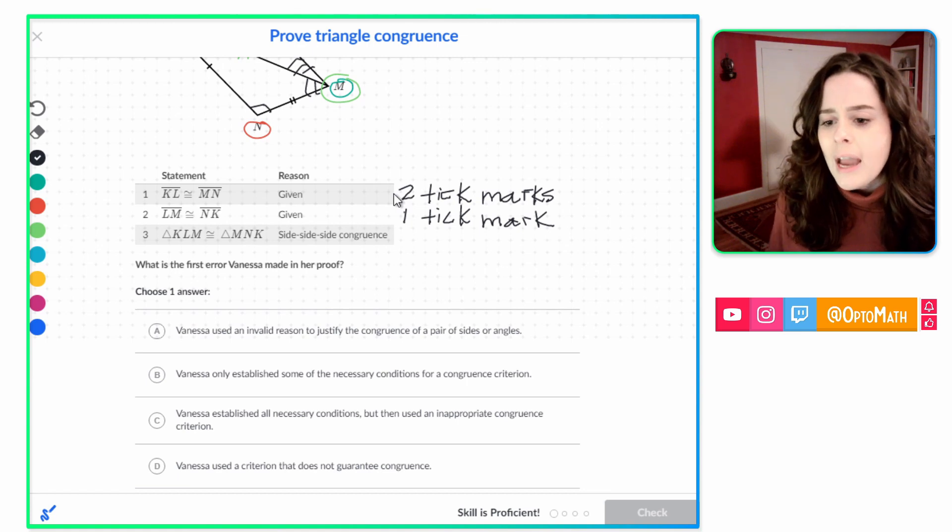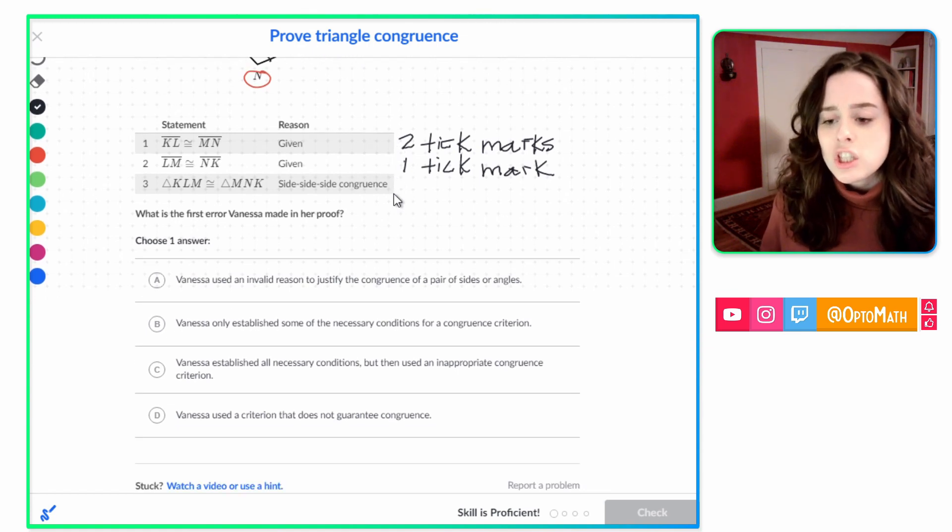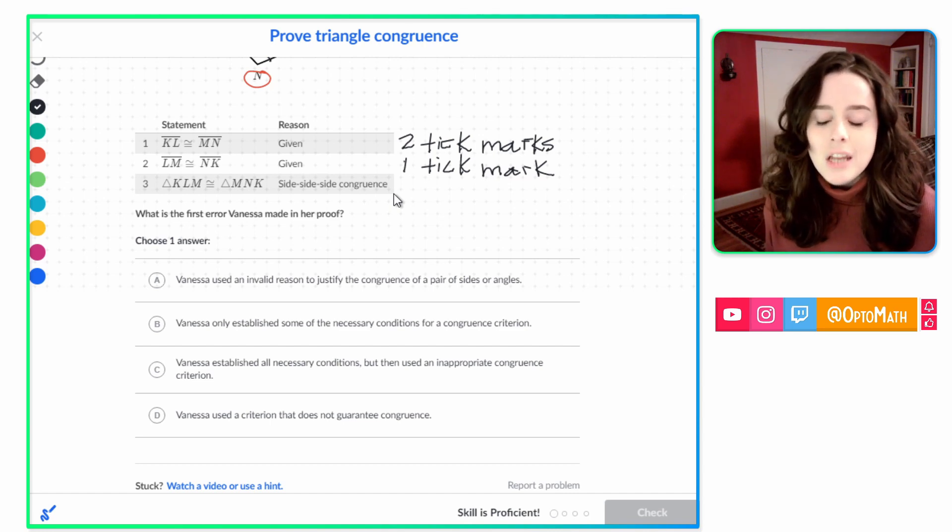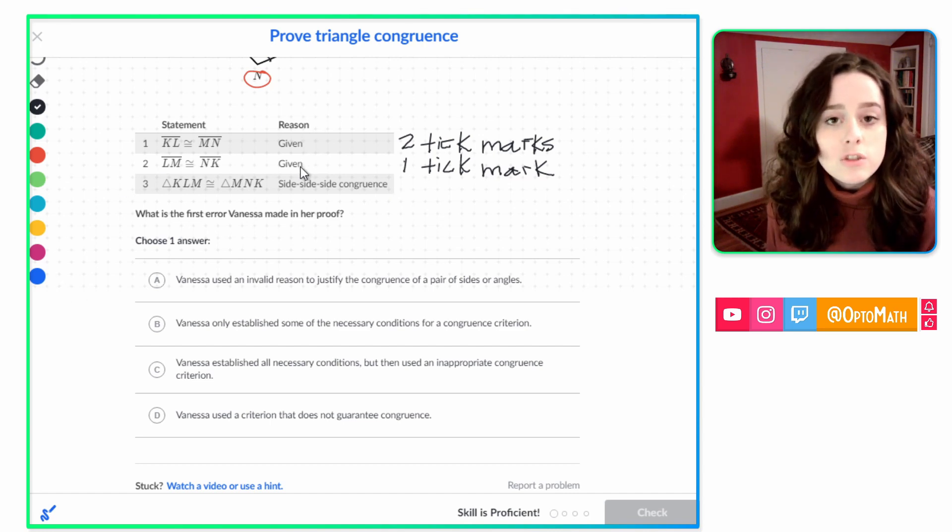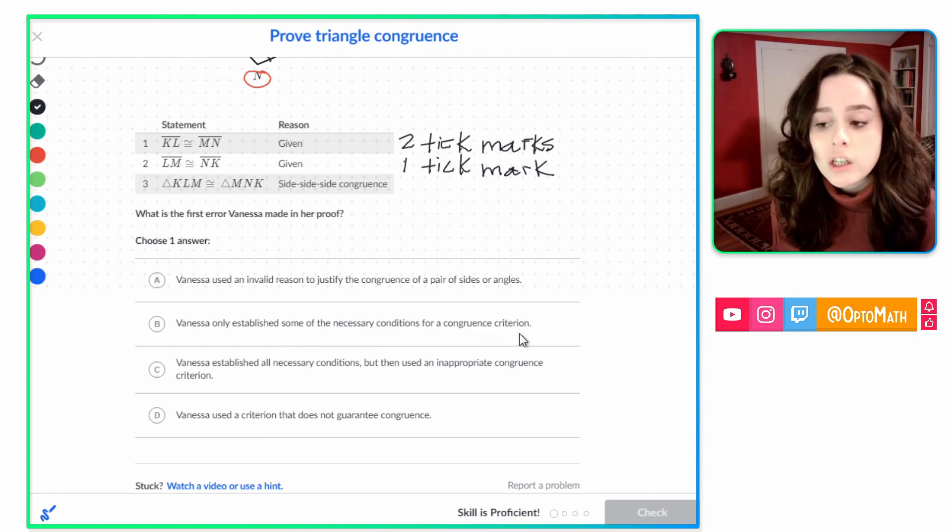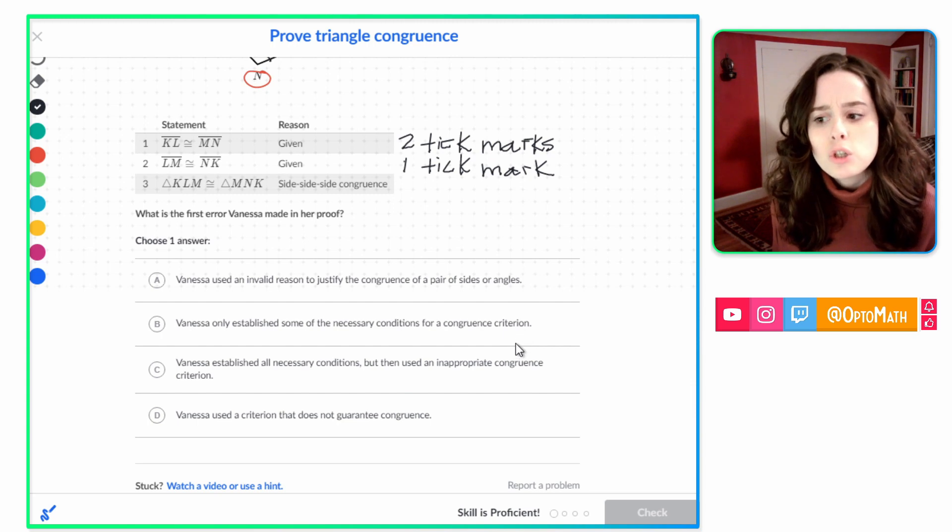So A says, Vanessa used an invalid reason to justify the congruence of a pair of sides or angles. Not true. She had the correct reasons for both of those sides she claimed were congruent. B says, Vanessa only established some of the necessary conditions for a congruence criterion. That could be it, but let's continue to read and make sure.